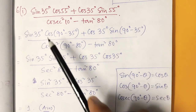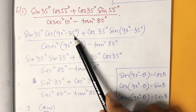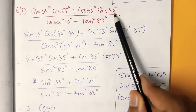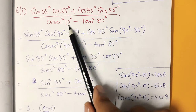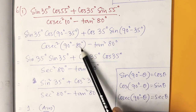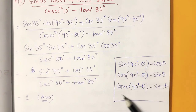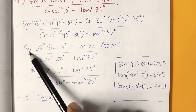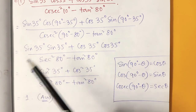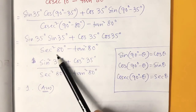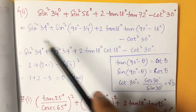Now problem 6(i). Here 55 plus 35 add up to 90, so we replace 55 by (90° − 35°). Also 10 plus 80 add up to 90, so we replace 10 by (90° − 80°). After applying the formulas, we get sin²35° + cos²35° = 1, and sec²θ − tan²θ = 1. So 1 by 1 equals 1, which is the answer.